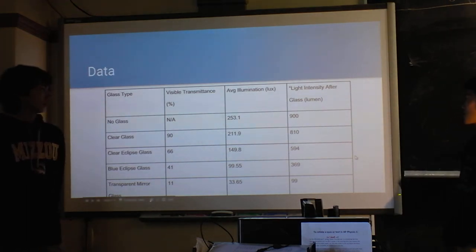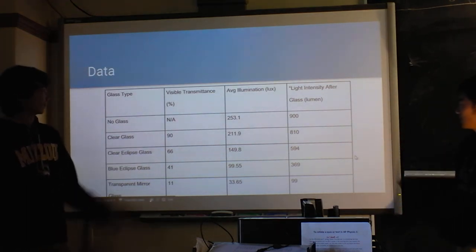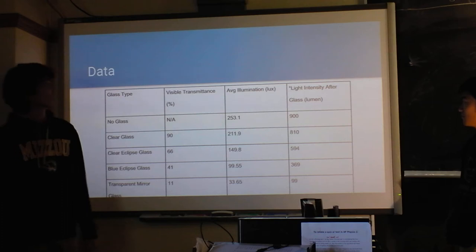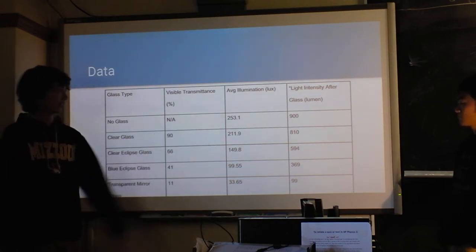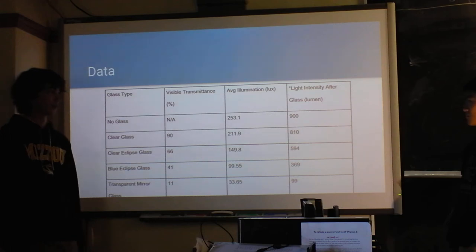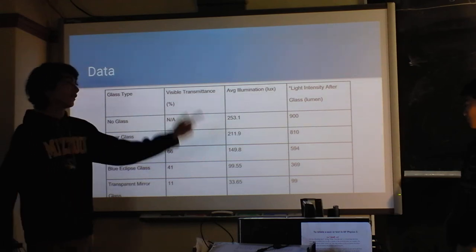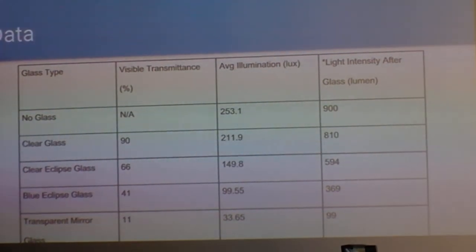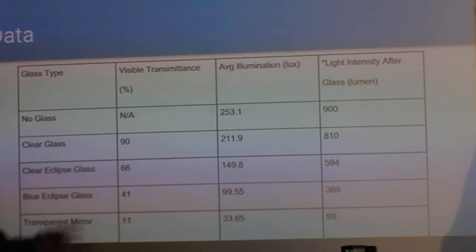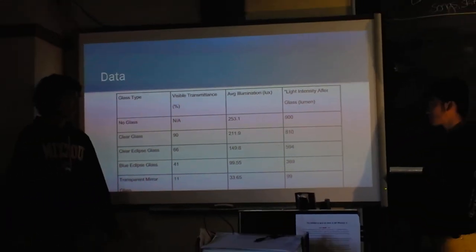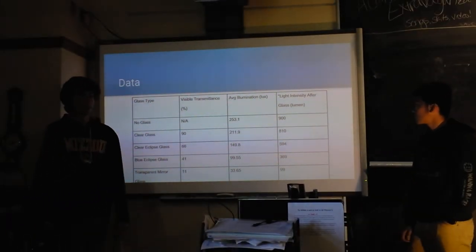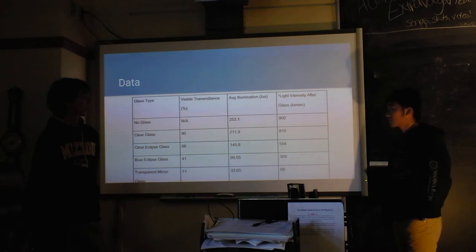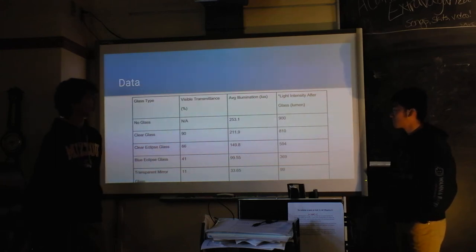We basically took data with Logger Pro to see the illumination after each glass filter. This is our data. We took the illumination from the Logger Pro graph and calculated the light intensity after it reached the sensor by taking the lumens from the light source and multiplying by the visible transmittance.